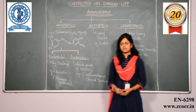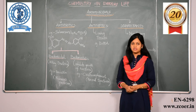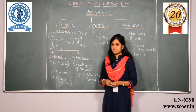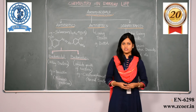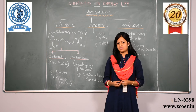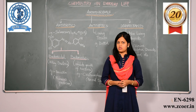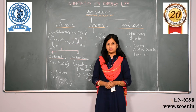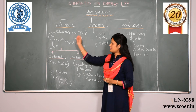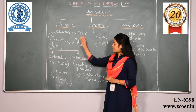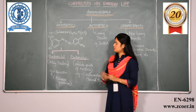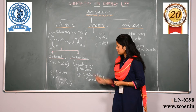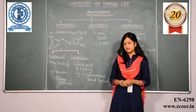Let us look at the next subdivision of antimicrobials which is antibiotics. Antibiotics are derived from living matter or microorganisms to kill or prevent other microorganisms. One example of it is salvarsan. Its chemical composition is C12H12As2O2N2. Antibiotics can be further subdivided as narrow spectrum and broad spectrum antibiotics.